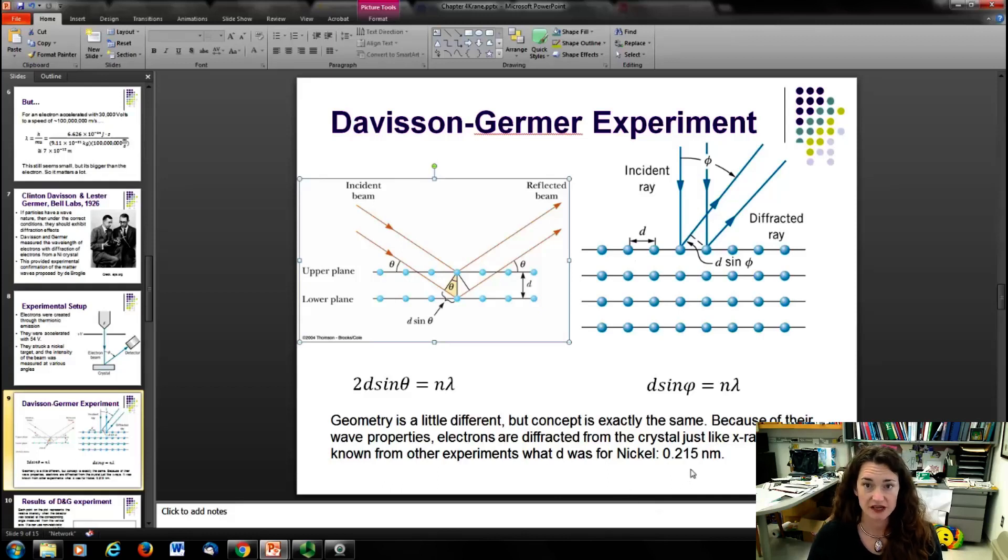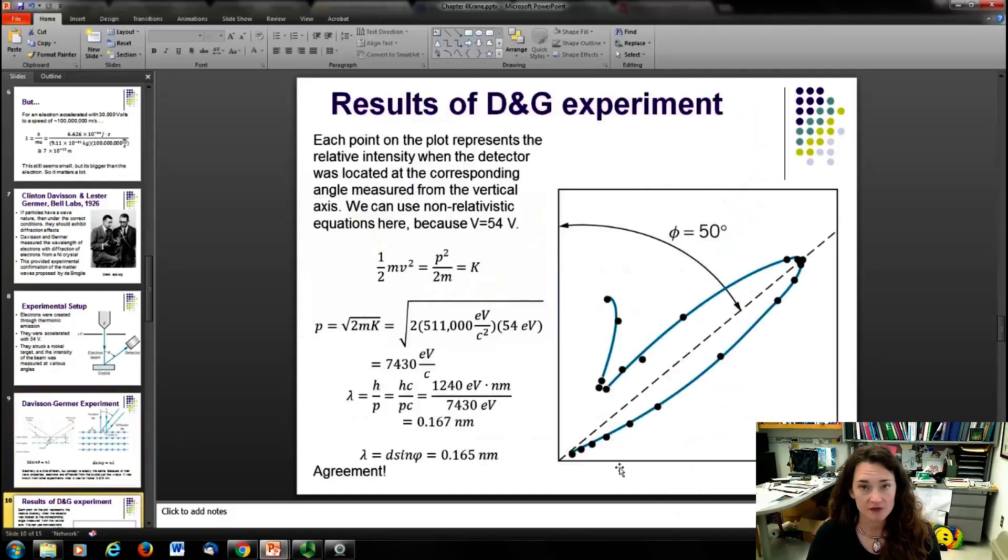So, what they saw when they plotted their data... Now, if you look here, each point on this plot represents the relative intensity of the electron beam when the detector was located at a corresponding angle, measured from the vertical axis. Okay? And then they plotted it all out. Okay? You can see here, the φ is actually measured here and shown. And you can see that there's a maximum in intensity at that angle, φ is equal to 50 degrees. So that was the results from their experiment.